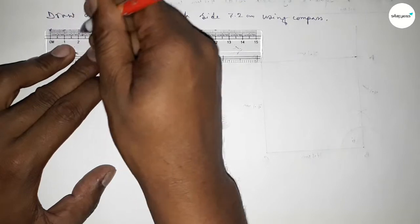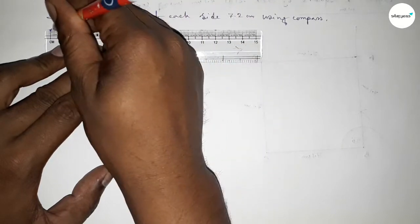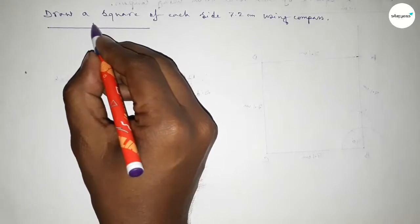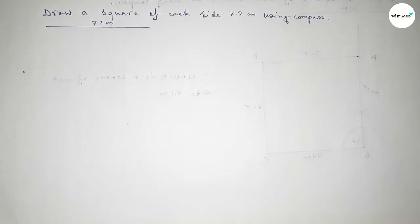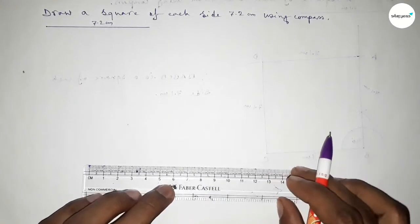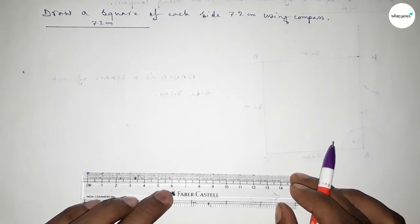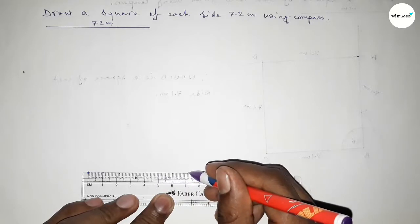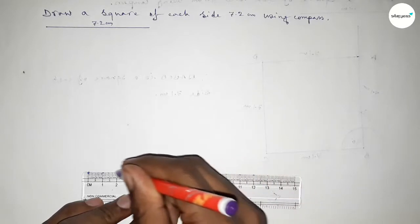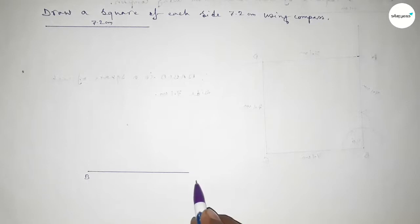This is 7 and 7.2, so this is a 7.2 centimeter line. Now again we have to draw here a line of length 7.2 centimeters: 0, 1, 2, 3, 4, 5, 6, 7, 7.2 — so this is the 7.2 centimeter line. Taking here point B and here point C.